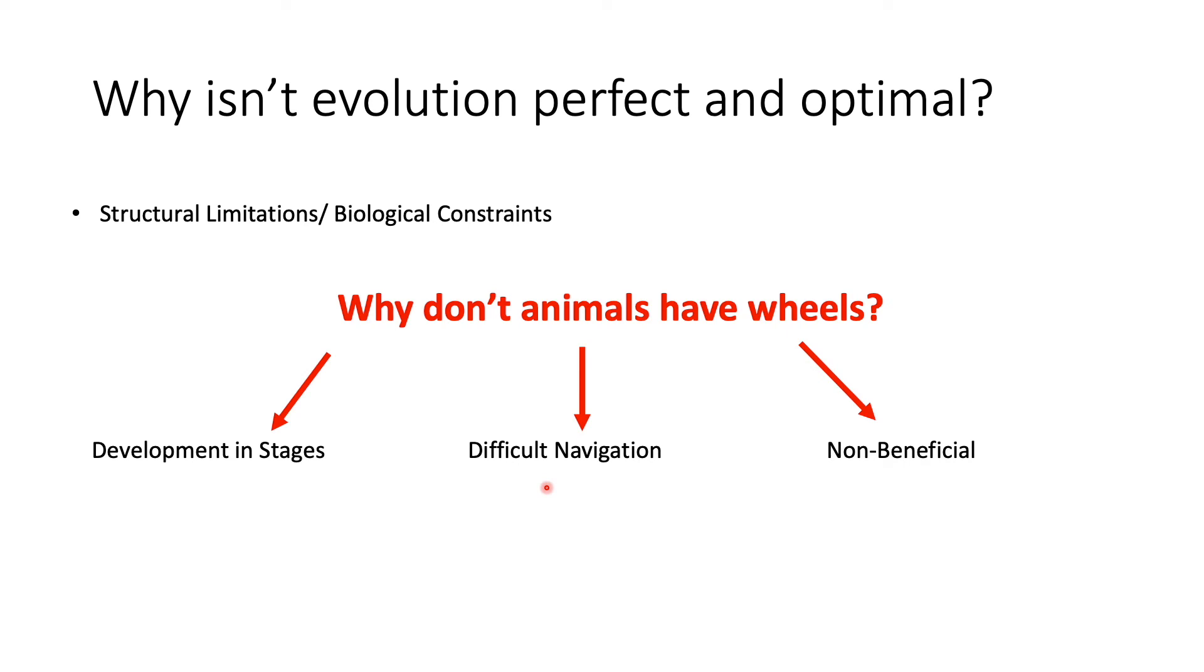Also, wheels are quite difficult to navigate. We use cars on roads for the most part—flat surfaces. Wheels are really good for flat surfaces, but animals aren't necessarily only facing flat surfaces. They're facing multiple different types of terrains—could be rocky or mountainous. Wheels might not provide the best form of transportation in these different terrains.